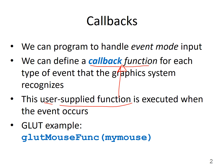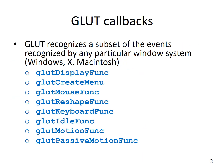Here is an example from GLUT. GlutMouse function is a mouse callback function. GLUT recognizes a subset of the events recognized by any particular window system, such as Windows, X, or Macintosh. GlutDisplay function, which we have already looked at, is a display callback function. GlutCreateMenu is a menu create callback function.